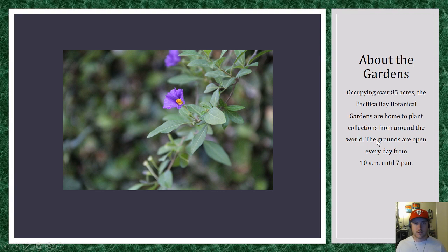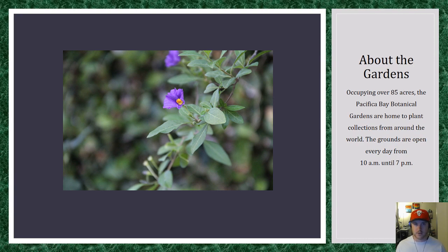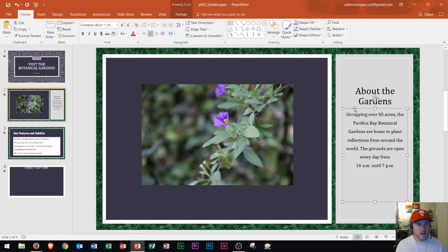Animations will be the way that I'll do that. So if I click on that paragraph and then I click the placeholder — which is the border around the paragraph — you'll notice that the placeholder turns from a dotted line to a solid line. Once I do that, I'm ready to add in animations.